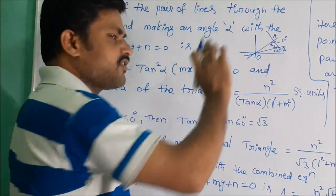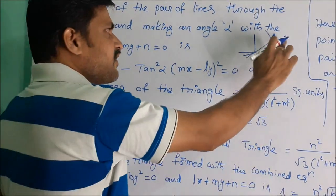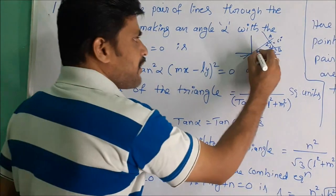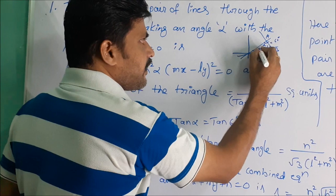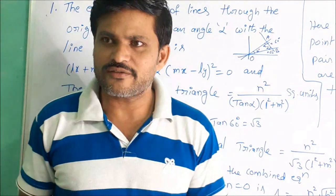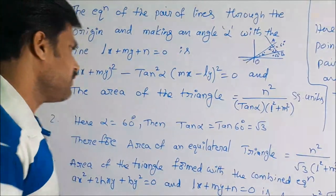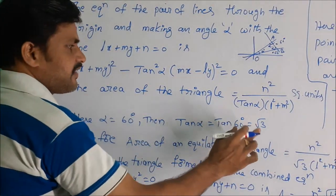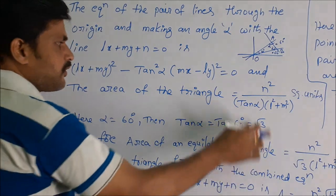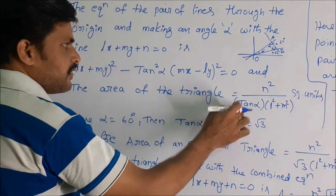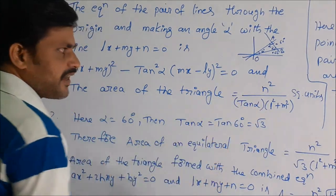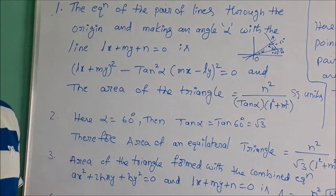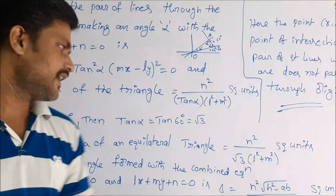When alpha = 60°, both base angles are 60°, so the remaining third angle is also 60°. All angles are equal, making the triangle equilateral. Here tan alpha = tan 60° = √3. Substituting this value, the area of the equilateral triangle formula becomes: n² / [√3 · (l² + m²)] square units.